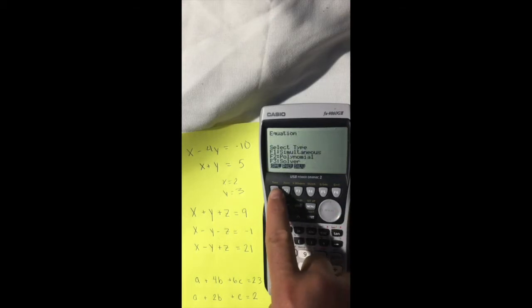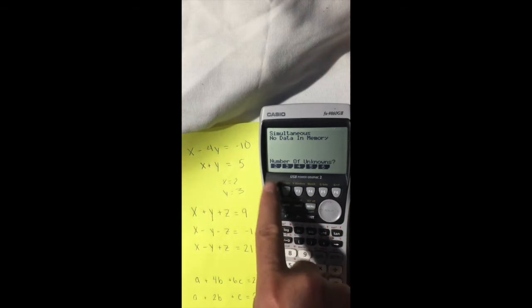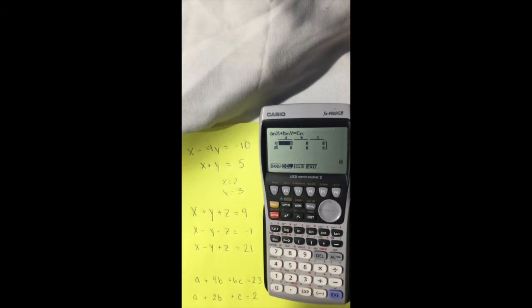You want to select F1, which is simultaneous, and then check out how many unknowns you have. In the first case, we have two unknowns, X and Y, so we're going to click 2, and then we're just going to fill in.